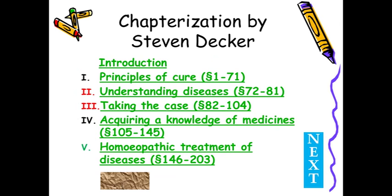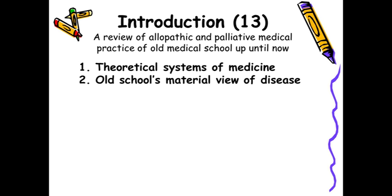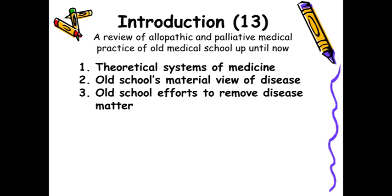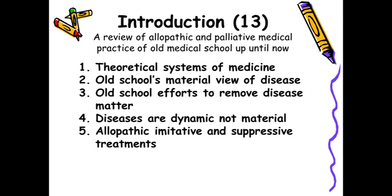The preparation and administration of medicines — called pharmacy in fact — and other therapeutic approaches are covered in the last six aphorisms. Now, in the introduction, Hahnemann reviewed the allopathic and palliative medical practice of the old medical school up till his time. The first topic is the theoretical system of medicine and the old school's material view of disease, then the old school's effort to remove disease matter. Allopathic, imitative and suppressive treatment examples have been given in very simple language.